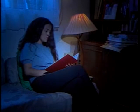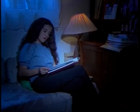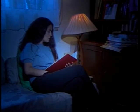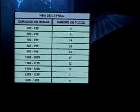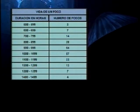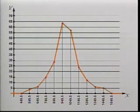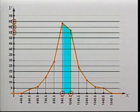Cuando se compra un foco, regularmente se dice que tiene un promedio de vida de tres meses o un poco más, dependiendo del uso que se haga de él. Pero en realidad, ¿qué duración tendrá un foco? La siguiente información está organizada en una tabla y en un polígono de frecuencias. En una prueba practicada en 220 focos, en el polígono de frecuencias se puede ver que la mayor cantidad de los focos tuvieron una duración comprendida entre 950 horas y 1050 horas aproximadamente.